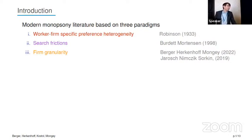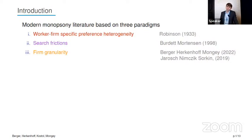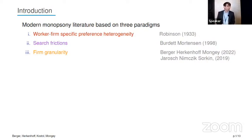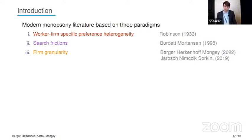The second common paradigm is search frictions. Search frictions can depress your outside option in bargaining and affect your rate of contacts and your wages, potentially making wages less than your marginal product. The third paradigm is firm granularity — the finiteness of the number of firms in a market. Independent of the first two, if you have Bertrand or Cournot competition, you can generate equilibrium at which workers are paid less than their marginal products.